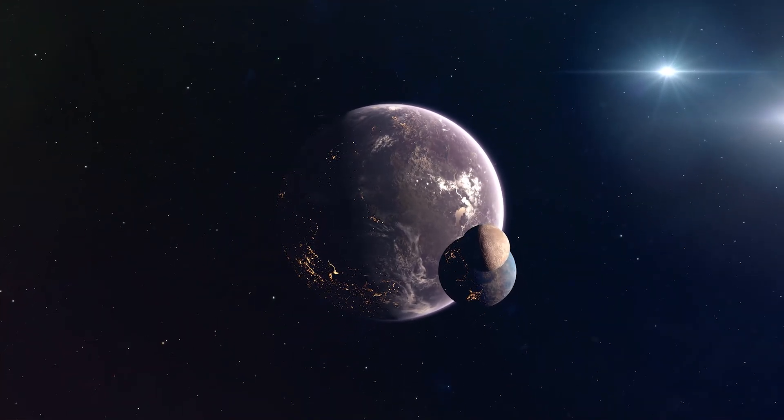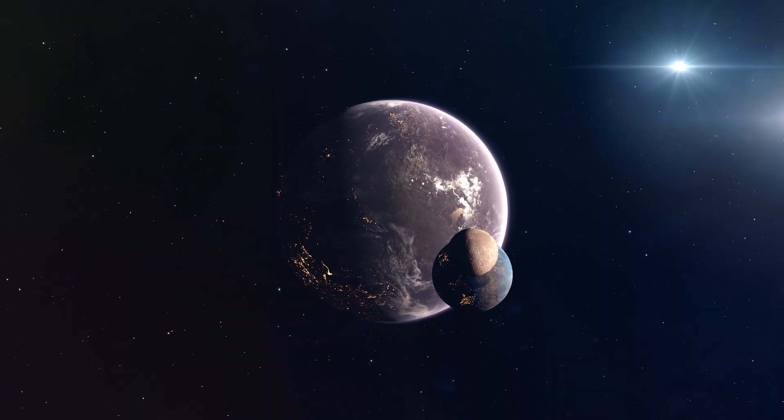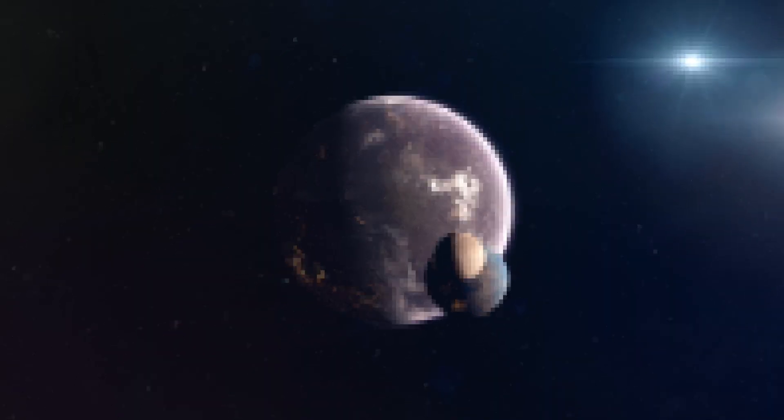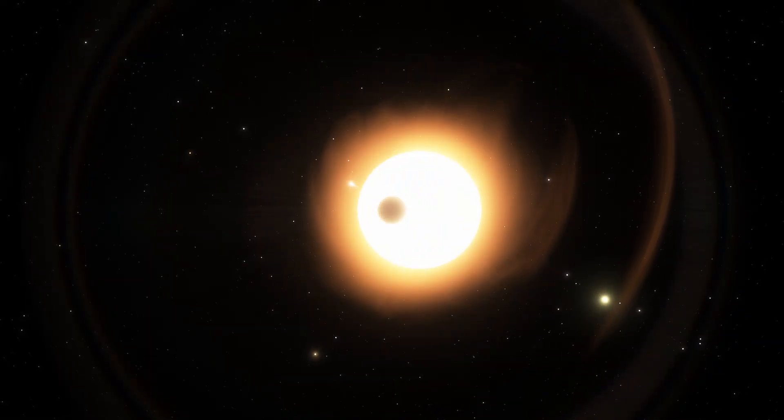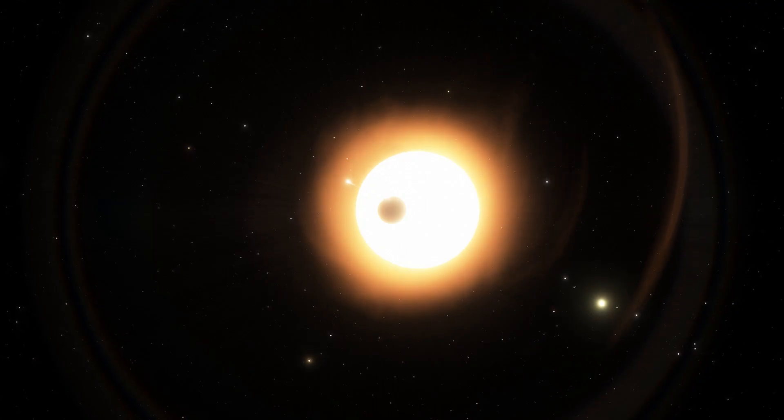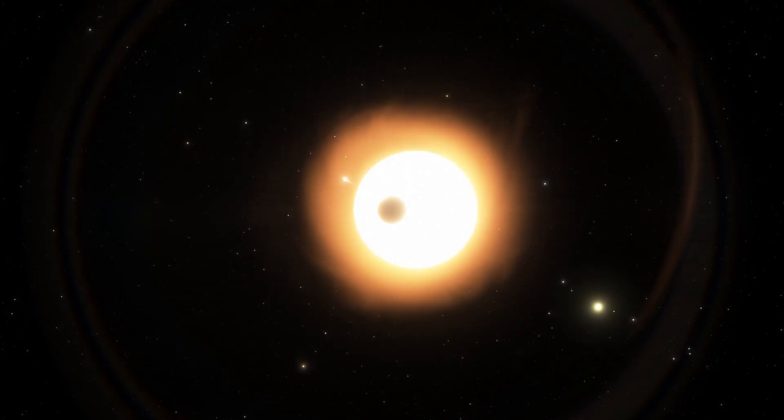These planets resemble our planet in terms of size, mass, and orbit. To us, extrasolar planets are little black shadows, not pale blue spots.